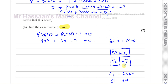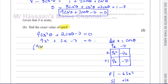The product of +9x and −7x is −63x² and their sum is +2x. Taking common factors: 9x(x + 1) − 7(x + 1) = 0, which factorizes to (9x − 7)(x + 1) = 0.